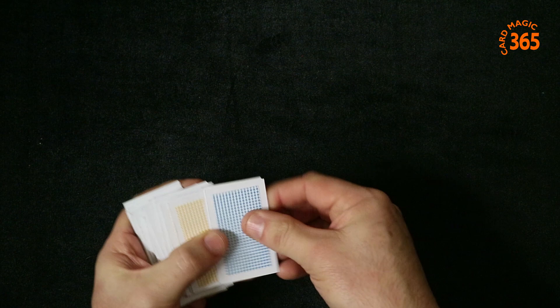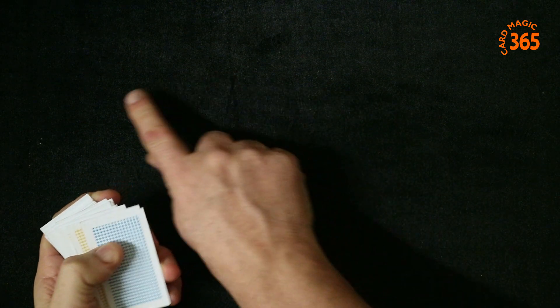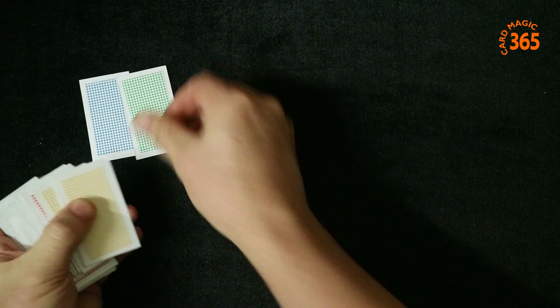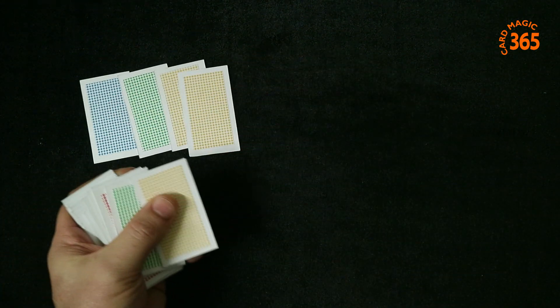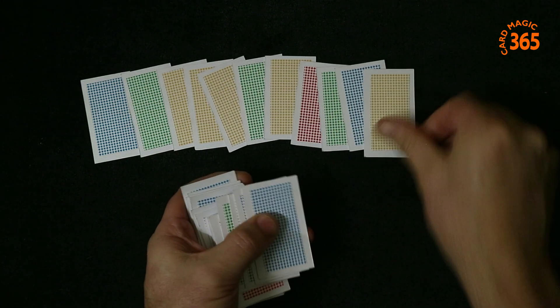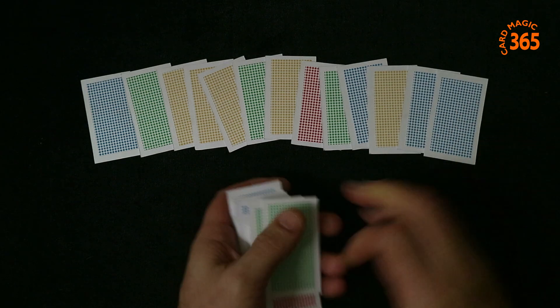Once again they deal out 13 cards, but you ask them to deal them in a row across the table. They deal these out: one, two, three, four, five, six, seven, eight, nine, ten, eleven, twelve, thirteen.